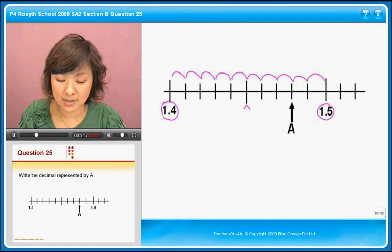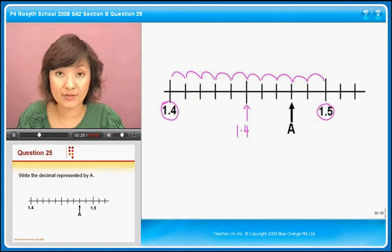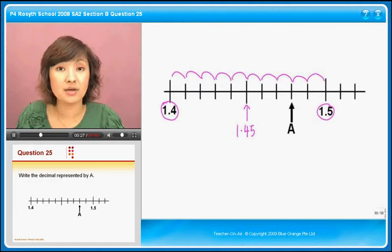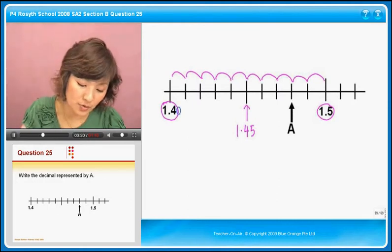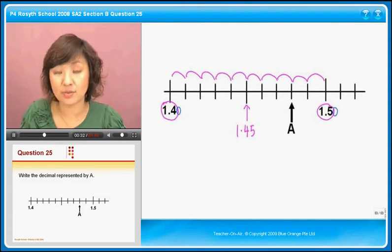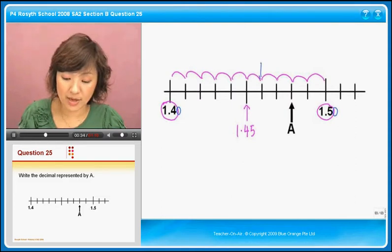We know that this is between 1.4 and 1.5, so half of it is 1.45. In other words, we can look at this as 1.40, this is 1.50. If this is 1.45, then